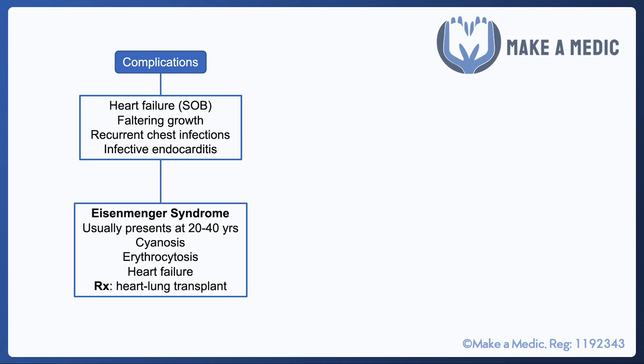Another condition worth briefly touching upon is Eisenmenger syndrome. It's pretty rare but very important because it has a very high morbidity and mortality rate, it's difficult to treat, and it's a useful concept to remind yourself of how the physiology of shunts works.